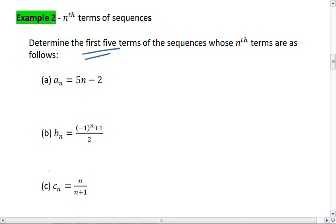Try this on your own first. If you need to, watch me work through a_n, and then try b_n and c_n on your own. For a_n, I want to figure out the first five terms. So I plug in 1 to figure out the first term. This gives me 5 times 1 minus 2, which is 3.